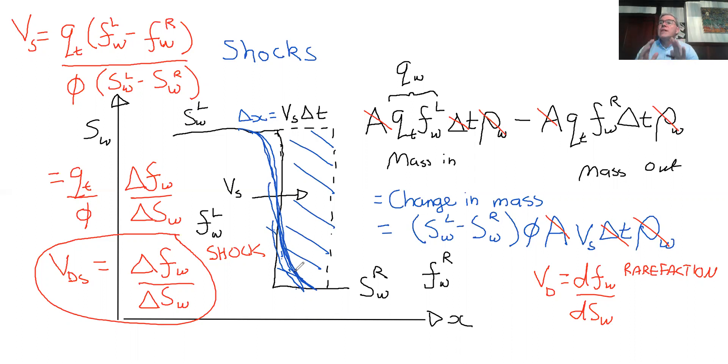But at the field scale where we're looking at displacements over several hundreds of meters, it's still small. So it's still a perfectly reasonable approximation to say that we have a sharp change in saturation. In reality, we know it's smeared out due to capillary pressure.